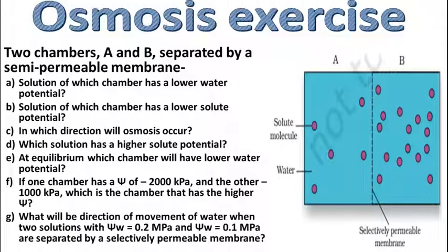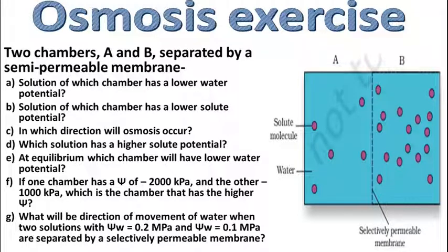What will be the direction of movement of water when two solutions with water potentials of 0.2 megapascal and 0.1 megapascal are separated by a semi-permeable membrane? जिसकी value ज़्यादा है — 0.2 megapascal वाले की value ज़्यादा है — तो वहाँ से जो water है, वो 0.1 megapascal की तरफ move करता है।